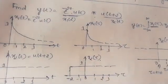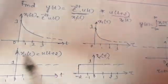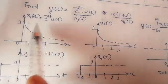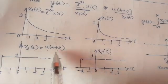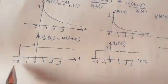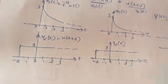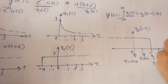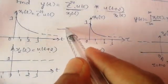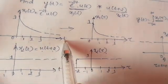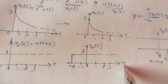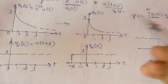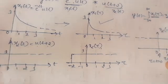First I will sketch the two signals as given. x1 of t is the exponential signal, sketched here. Similarly I sketched x2 of t, that is u of t plus 2 — the signal starts from minus 2 onwards. In the formula the index tau is used, so I represent the same signals with index tau instead of t. x1 of tau is sketched. Next we want x2 of t minus tau.